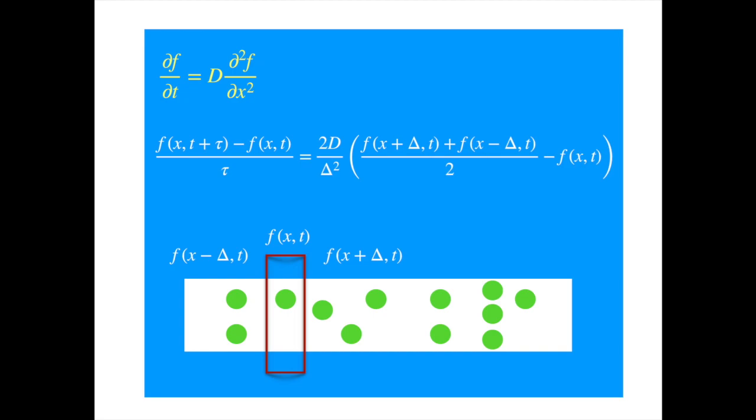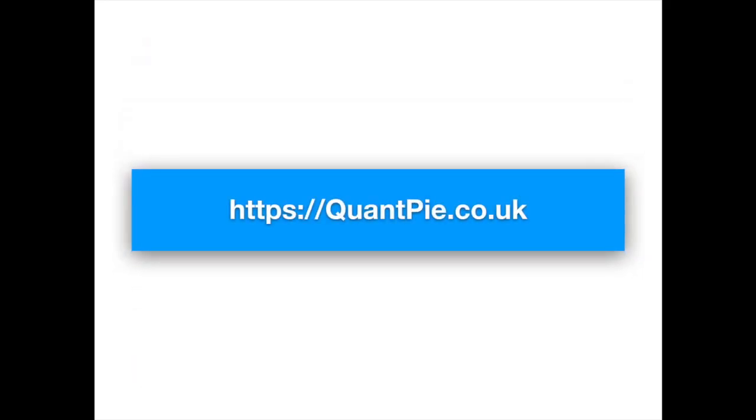Let's bring back the diagram and the functions that represent the number of particles at different locations at a given time. So the left hand side is just the change in the number of particles at location x, with respect to time. And the right hand side is telling us that if the average number of particles around the point x is higher than the number of particles at point x, then we shall see the number of particles at x increasing with time. And if the average number of particles to the left and right of x is smaller, then we shall be seeing the number of particles at x decreasing. I hope you enjoyed the video and I look forward to seeing you in the next.